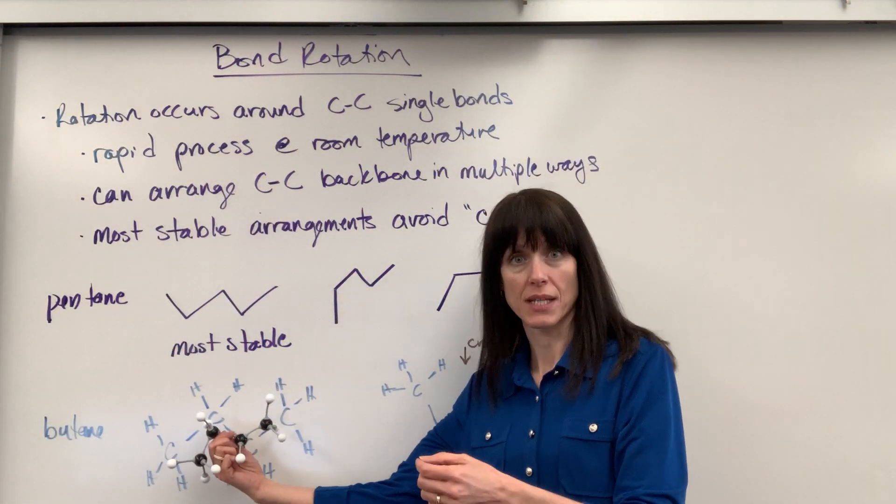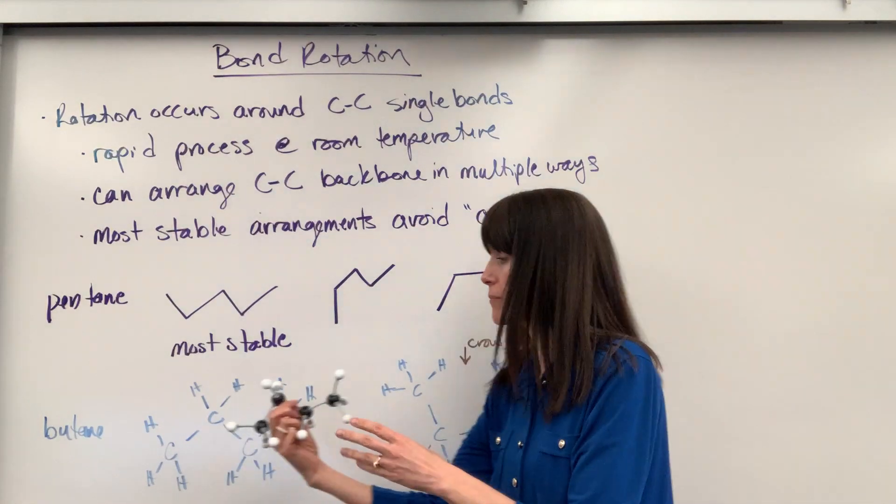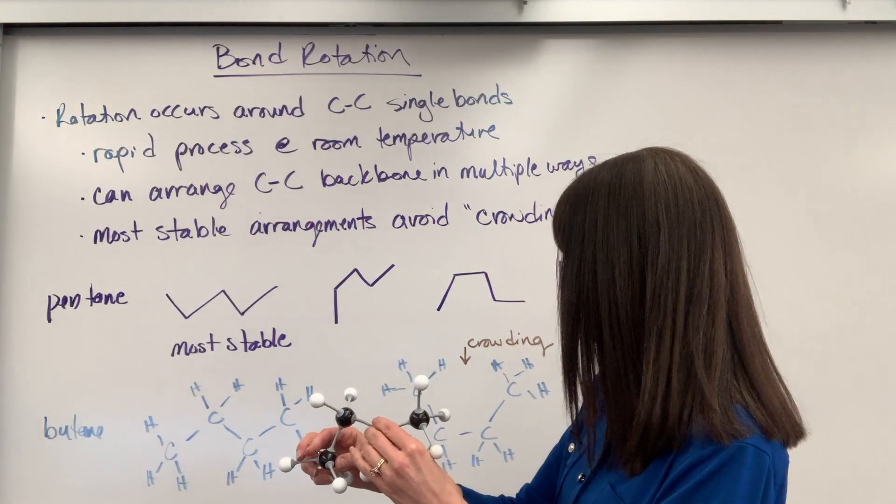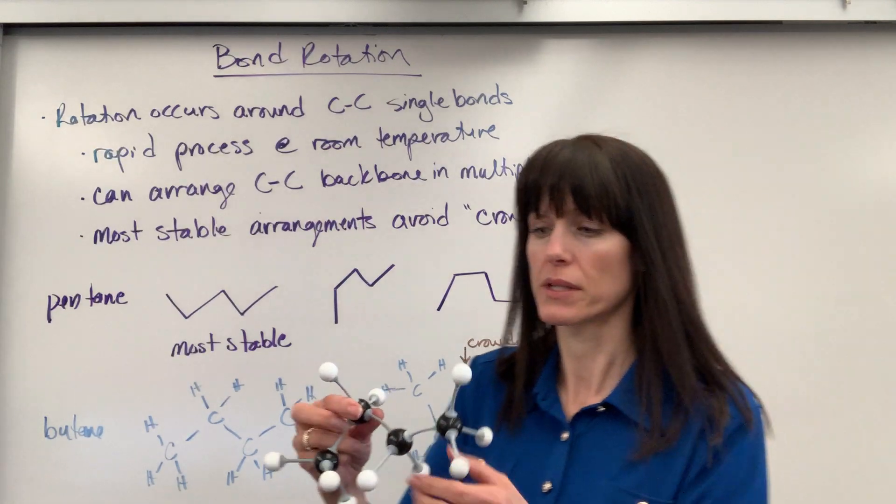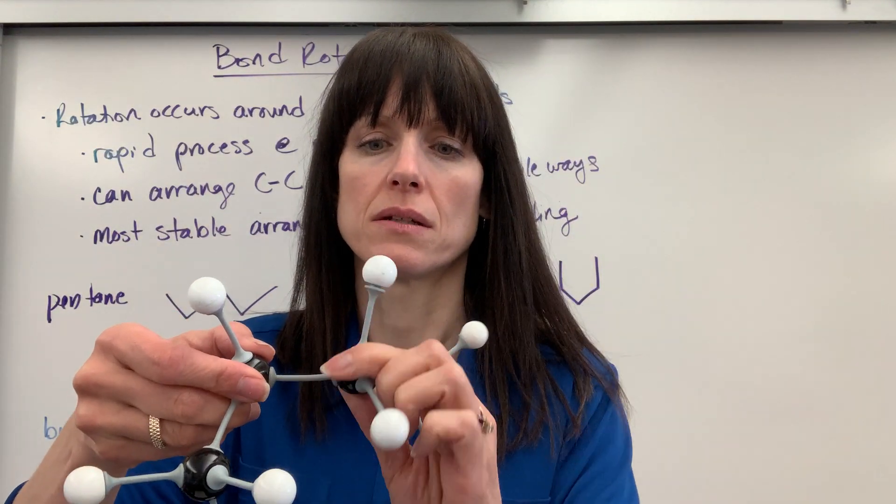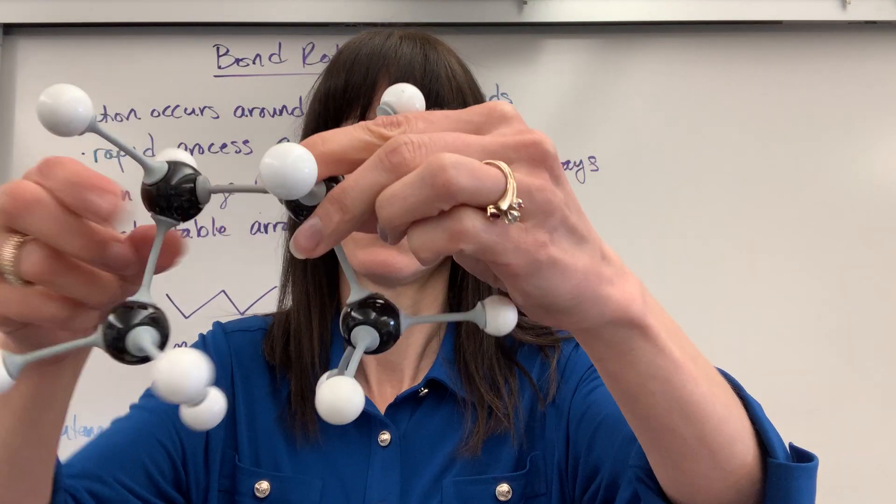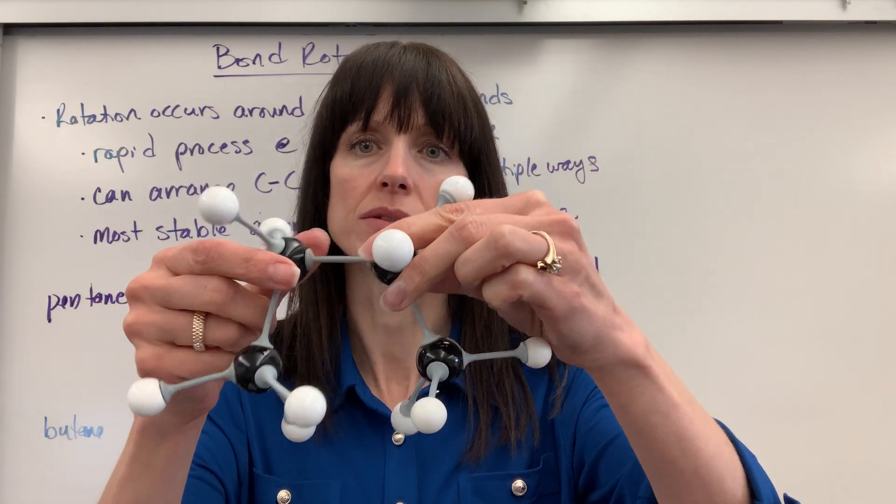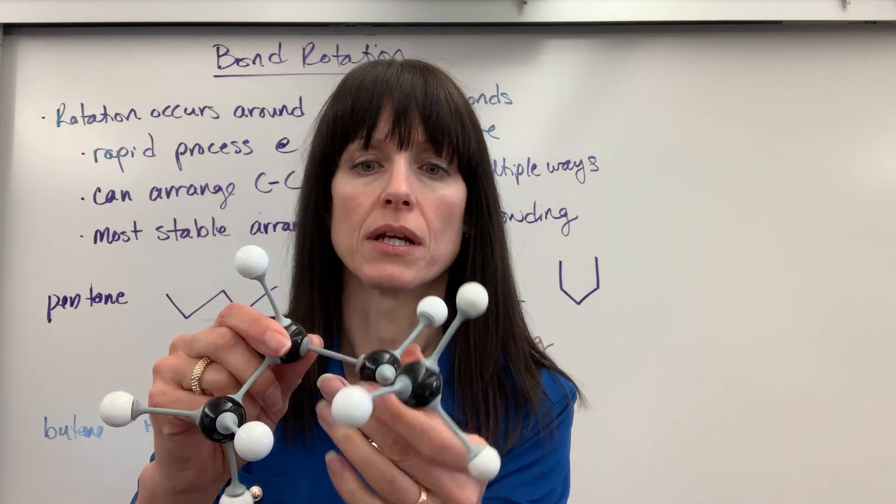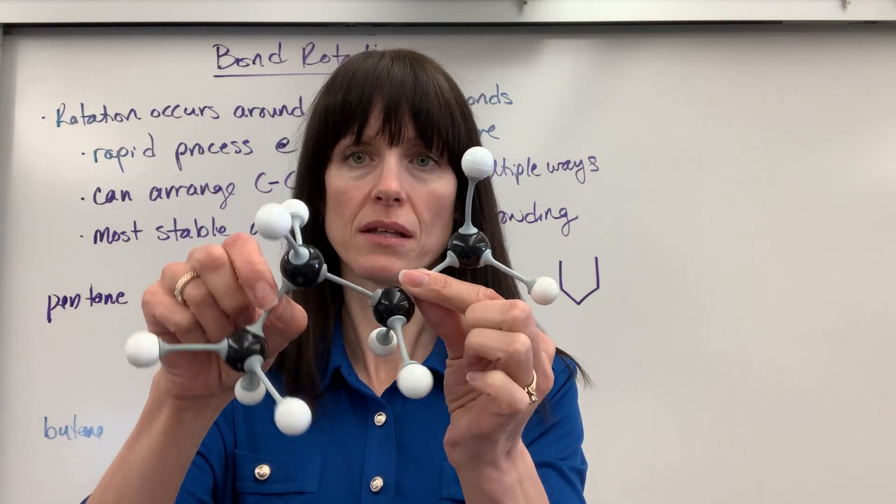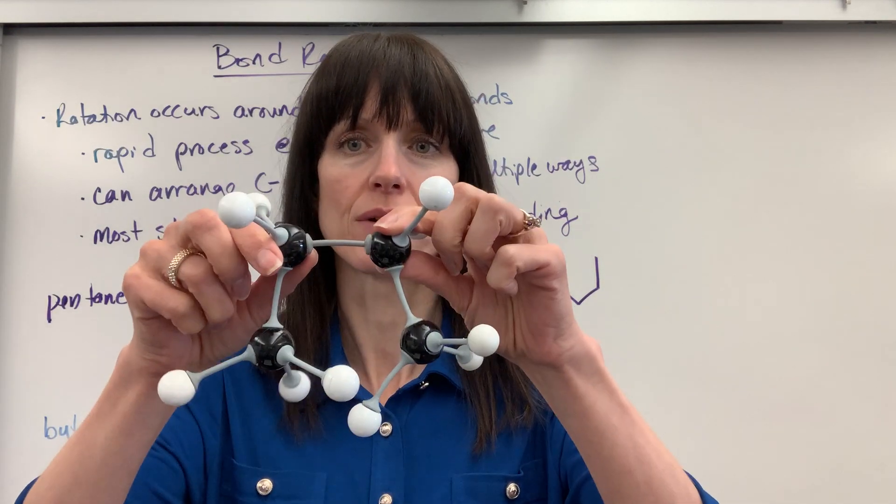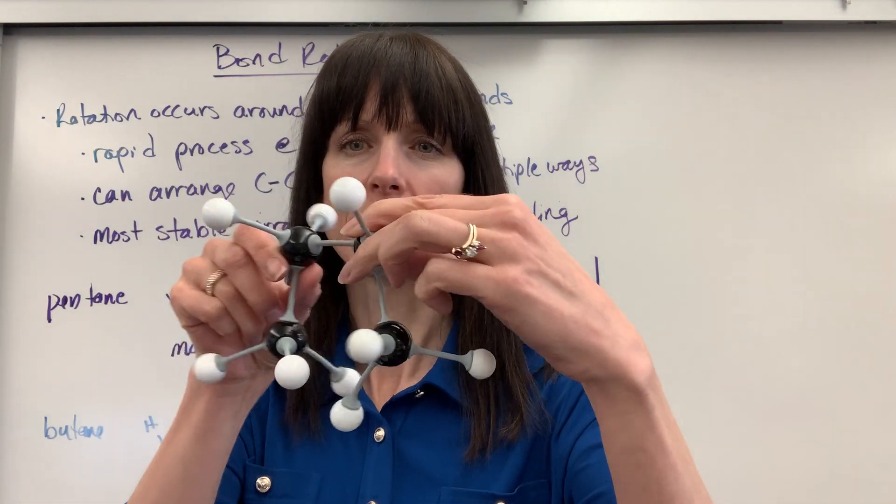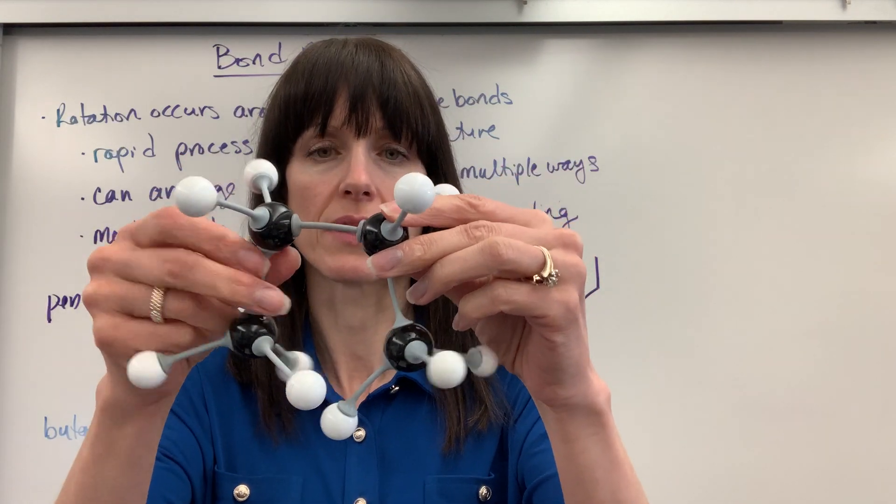There's going to be our most stable. We have the least amount of crowding. Now watch what I'm going to do. I'm going to rotate this bond right here. So we're going to go, if I rotate this, check that out. Those are really close. And let me rotate it again. Rotate it up. You can see that they're far away. Rotate it down. They're close. And see that crowding with the hydrogens. Really quite crowded right there.